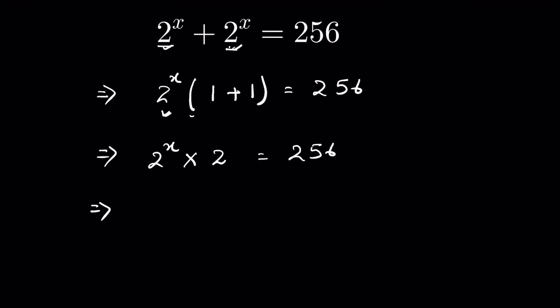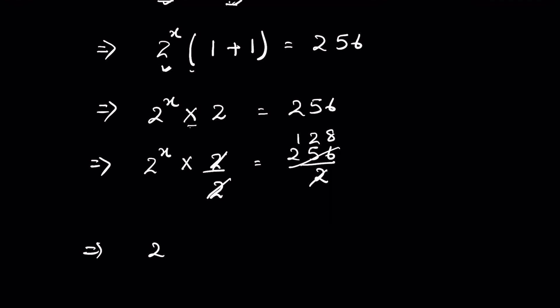Now using the reciprocal action, multiplication changes to division. So both sides we divide by 2 to balance the equation. 256 also divided by 2, so 2 to the power x is equal to 128.